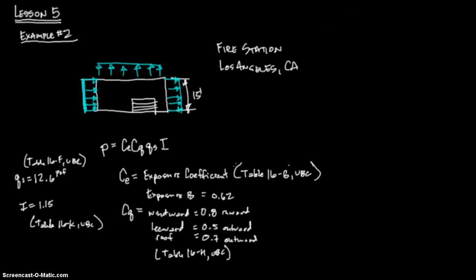So we have all of our information. Let's go ahead and solve. CE is 0.62. CQ is going to either be 0.8, 0.5, or 0.7. I'm going to write 1, 2, and 3 on top and over here. And then QS equals 12.6 PSF. And then our importance factor is 1.15. So we're going to go P equals equals equals. This is going to be windward, this is going to be leeward, this is going to be roof.